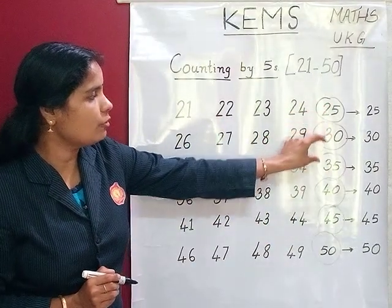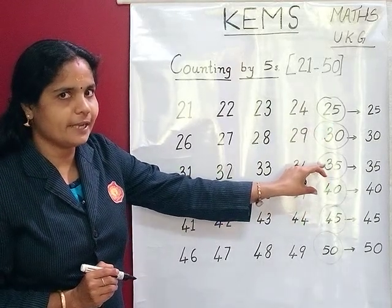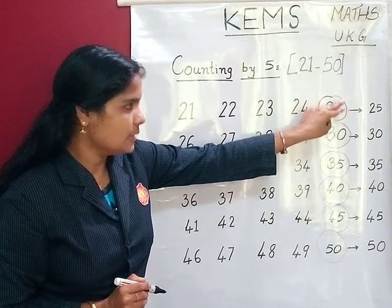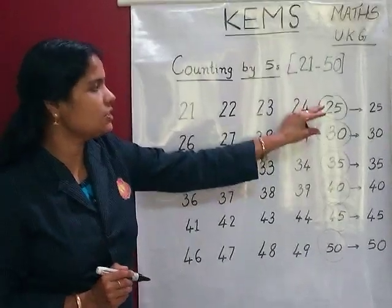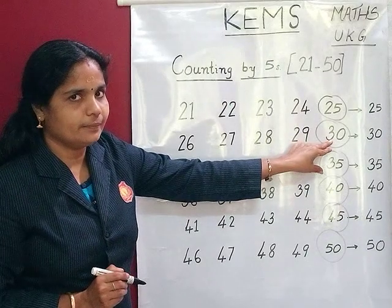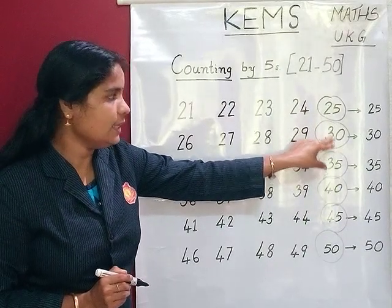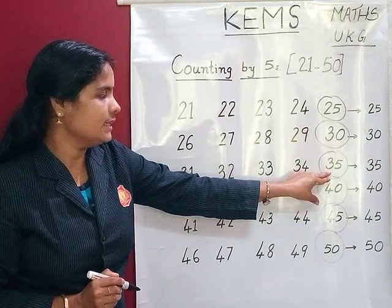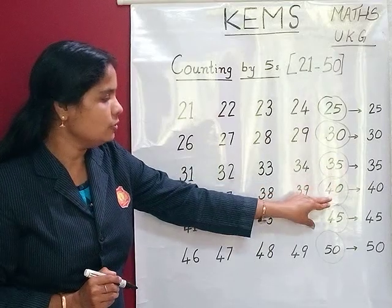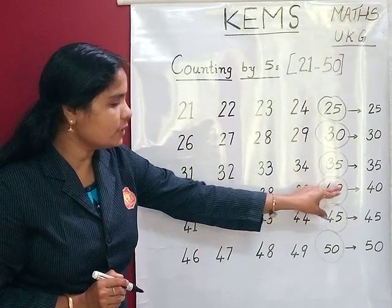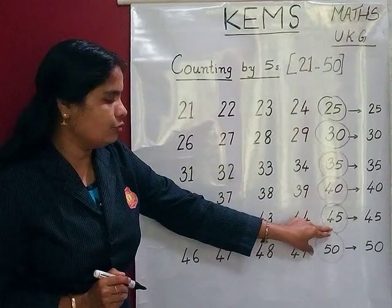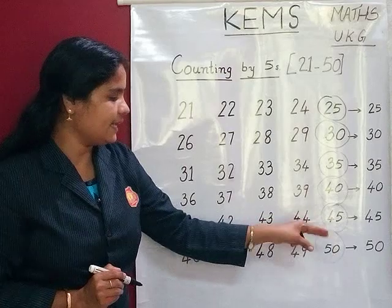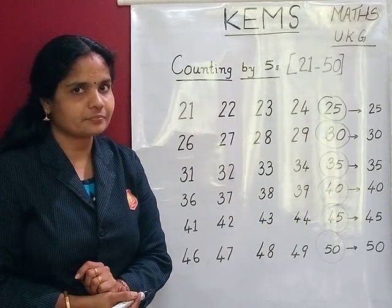There is a gap of 5 numbers. The gap of 5 numbers: 25 — add 5, we get 30. Then 30 — add 5, we can get 35. Then 35 — add 5, we can get 40. 40 — add 5, we get 45. Then 45 — add 5, we can get number 50.